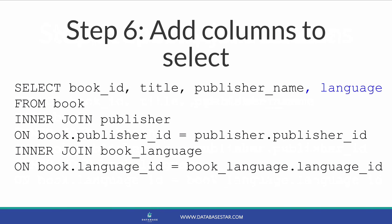Finally, we add whatever columns we want to see in our results from this third table into our SELECT clause. In this example, we add the language column. Now our query is done. We have successfully joined three tables together and displayed columns from all three tables. We can run this query and it will give us the data from three tables.